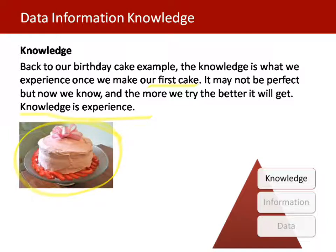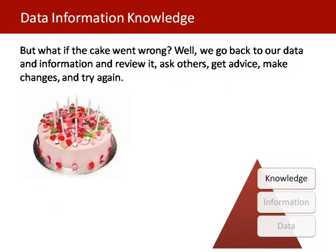We tried and we have our first cake. Now we have the experience — we have gone through that process. But what if the cake went wrong? We can go back to our data, go back to the information and review it. We can ask other people, ask the chef, get advice. We make changes and we try again, so our second try will be better. That is important because we're building on the experience of that knowledge.